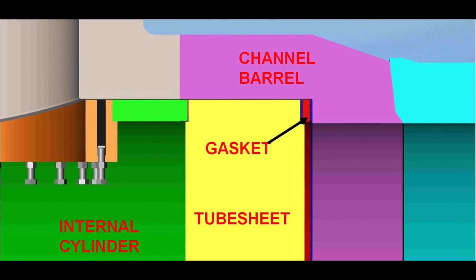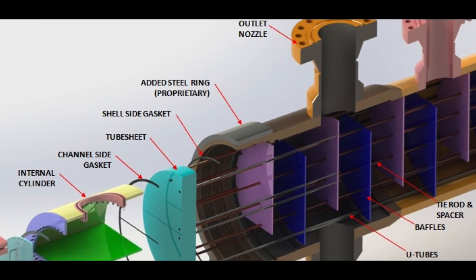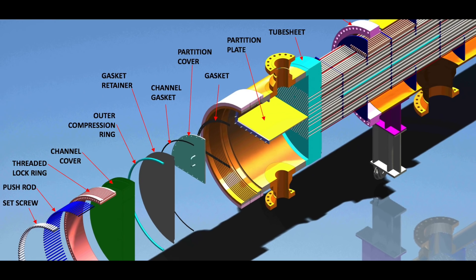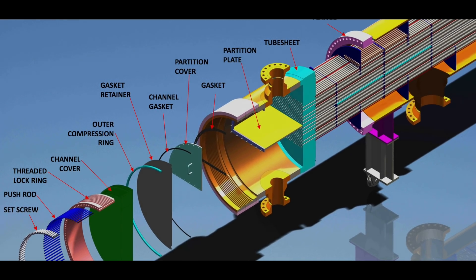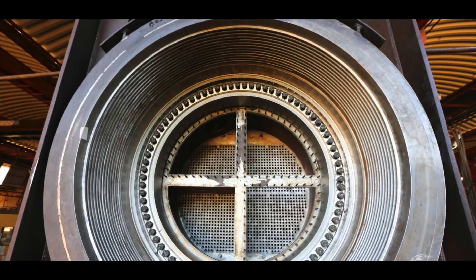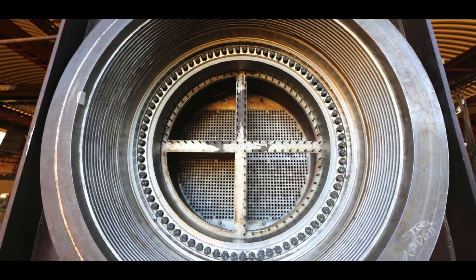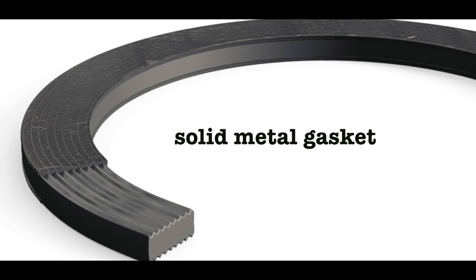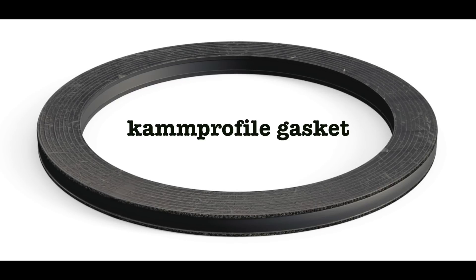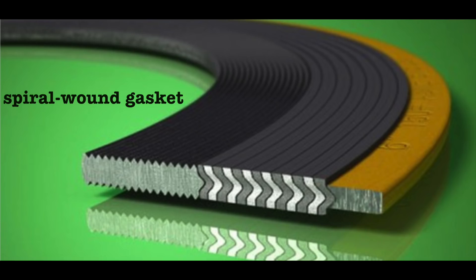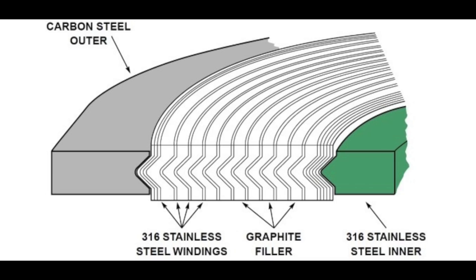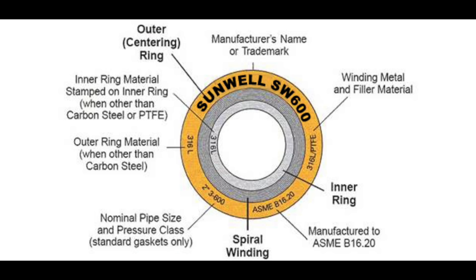Point 2: Shell to tube sheet gasket has to be designed for additional load caused by expansion of internals due to temperature. This is over and above the bolting load for design pressure and may result in crushing of the gasket. Point 3: Being a solid metal gasket, cam profile withstands this additional load. For a spiral wound gasket to withstand this additional load, its required width would be too large and it would become economically unviable.